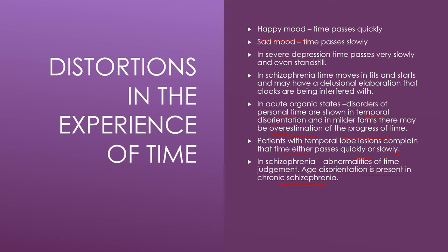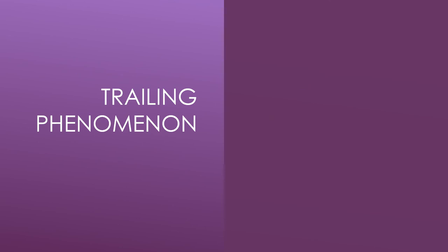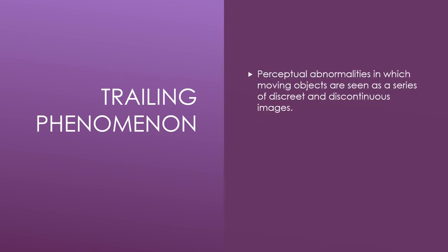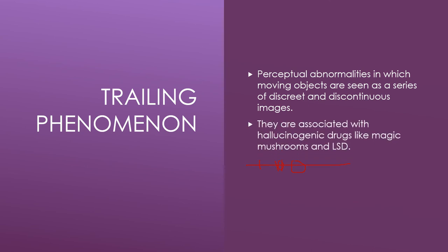What are trailing phenomena? These are perceptual abnormalities in which moving objects are seen as a series of discrete and discontinuous images. For example, a moving car is seen not as a continuous movement but as discrete images — here, then moved to here. They are associated with hallucinogenic drugs like magic mushrooms or LSD.